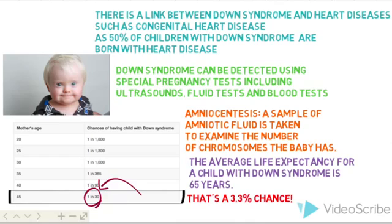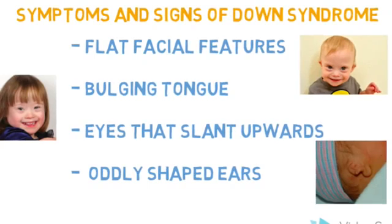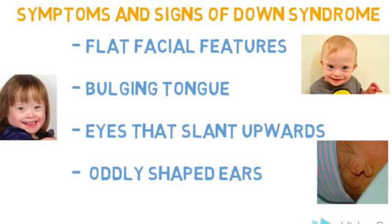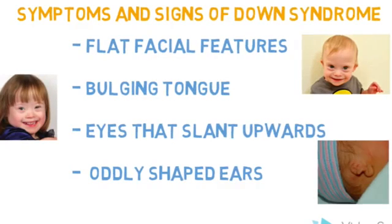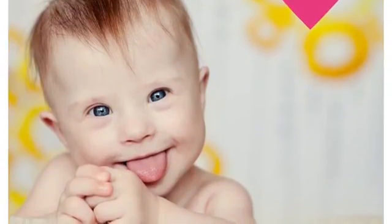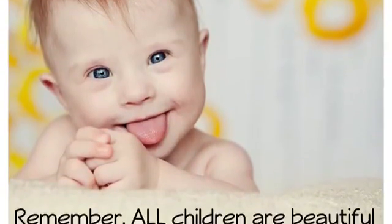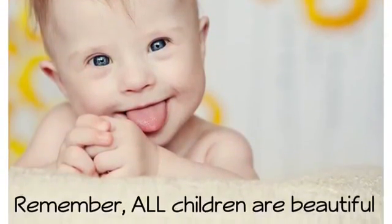The chances of having a child with Down's Syndrome increases as the mother gets older. Also, there is a correlation between having heart disease and having Down's Syndrome.